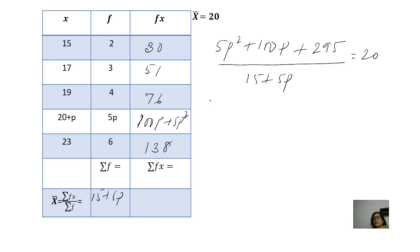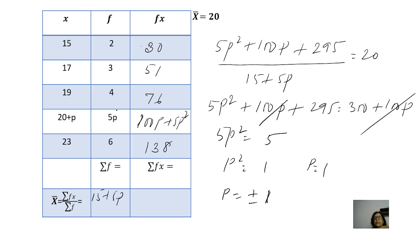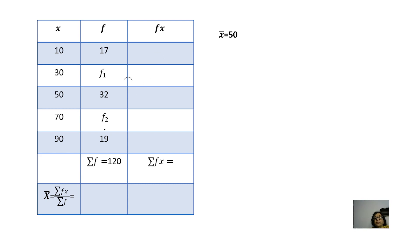Cross-multiplying gives: 100p + 295 = 20(15 + 5p) = 300 + 100p. The 100p terms cancel, leaving 5p² = 5, so p² = 1 and p = ±1. Since frequency cannot be negative, p = 1. Therefore the missing frequency is 5 × 1 = 5, and the corresponding value is 20 + 1 = 21. You can see this maintains the order: 15, 17, 19, 21, 23.